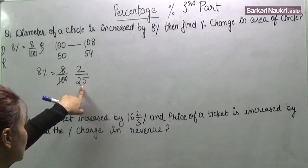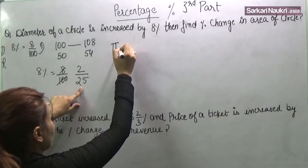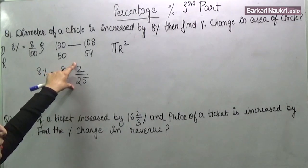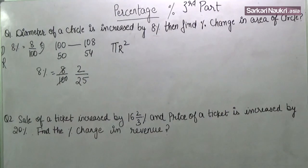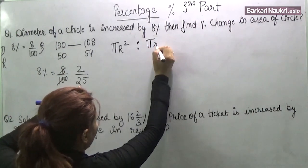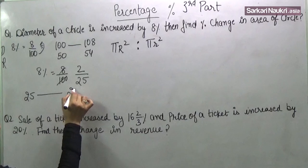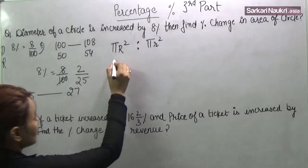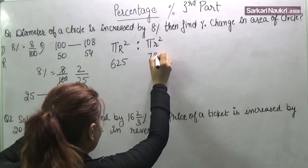What is the area of circle? Area of circle is pi r square. So we can write in this form. And the question is related to percent change in the area of circle. So pi r square ratio pi r square. So this is 25. It is increased 2 over 25. This will be 27. So the square of 25 is 625 and square of 27 is 729.